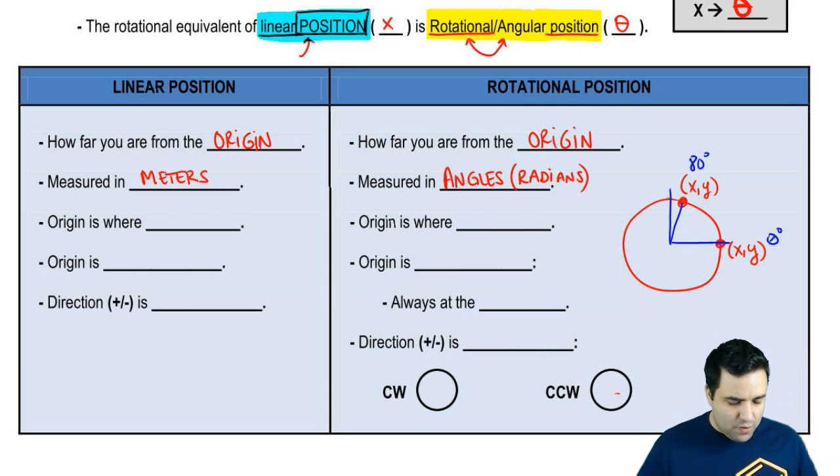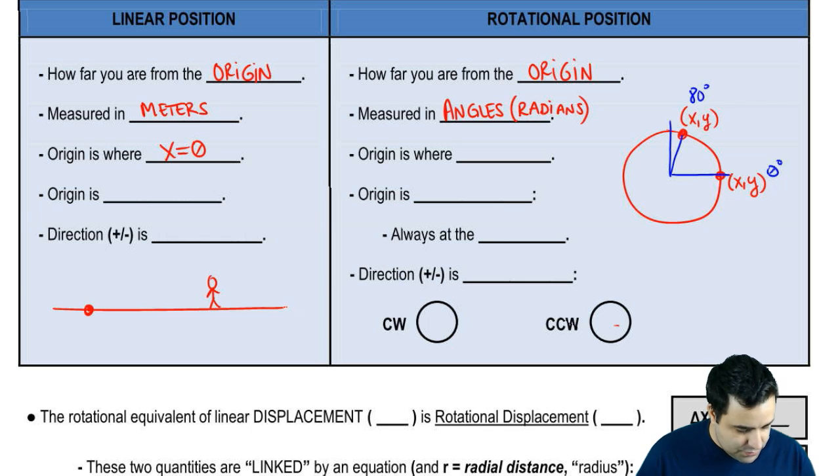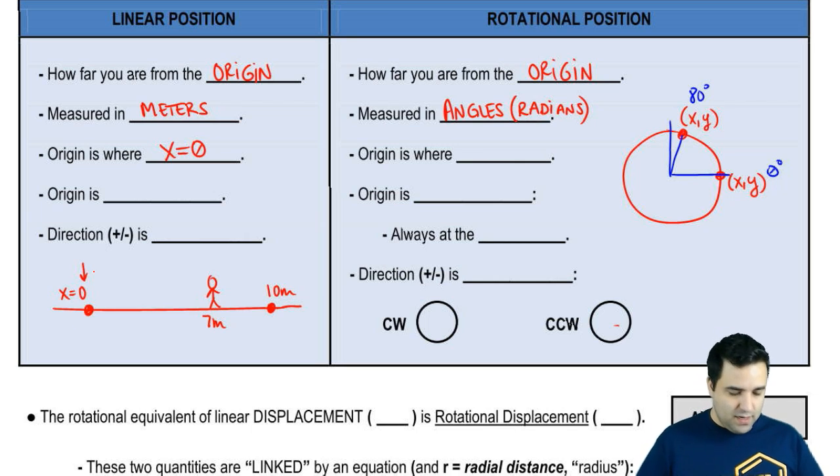Now, origin, if you remember, origin is simply where x equals zero. So for example, let's say we got a line here, and you are here. And then there's two points, let's draw three points here, just two points, whatever. And let's say that these two points are 10 meters apart. So this would be zero, and then this would be 10, and maybe you are at 7. So if this is x equals zero, this is where the origin is.